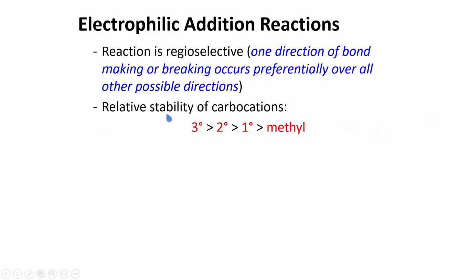To generalize, relative stability of carbocations follows this order: tertiary is more stable than secondary, which is more stable than primary, which is more stable than the methyl carbocation.